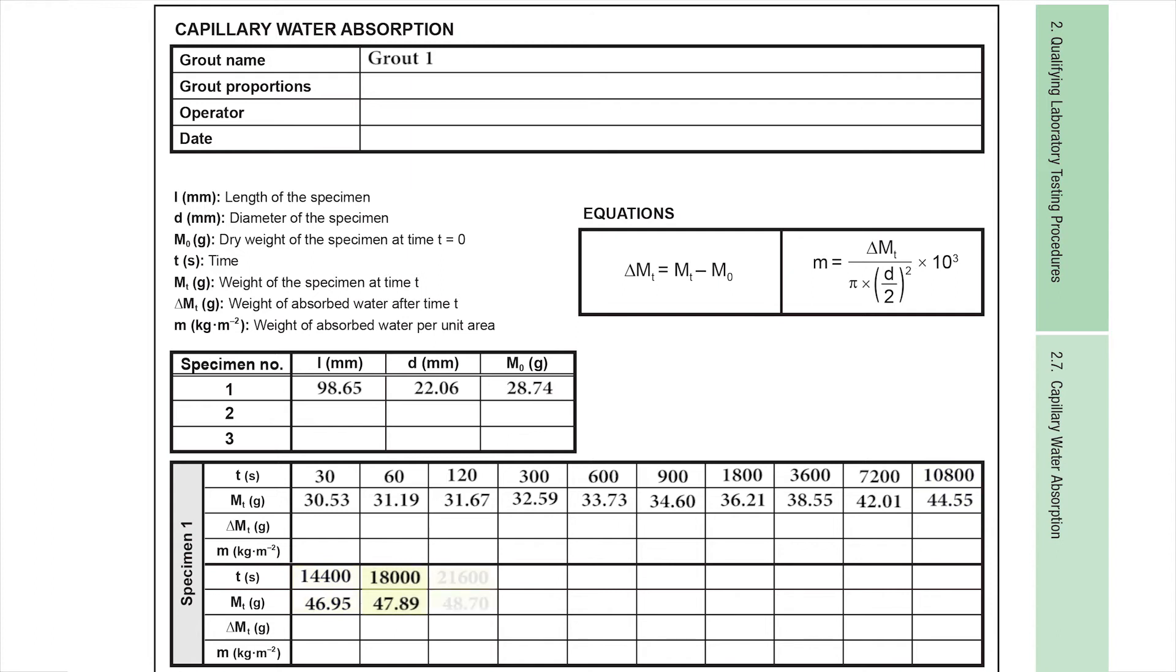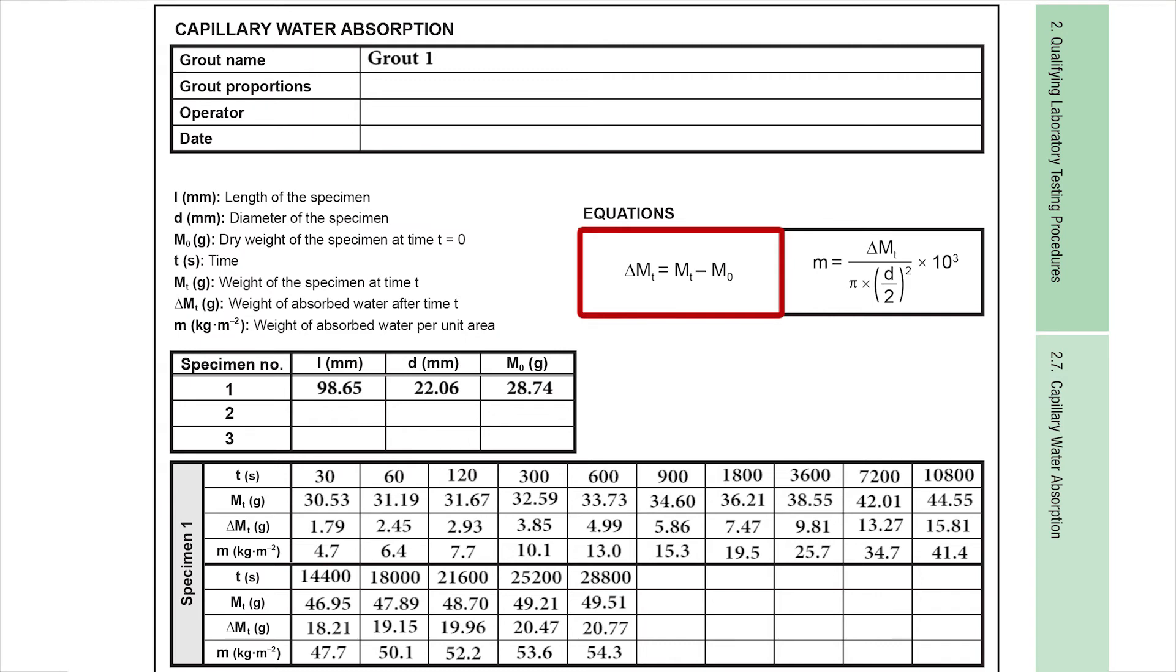Continue until the difference between two successive measurements is less than or equal to 1%. The amount of absorbed water after time t in grams is calculated as the difference between the weight of the specimen at time t and the dry weight of the specimen at time 0, both in grams. The weight of water absorbed per unit area in kilograms per square meter is calculated by dividing the amount of water absorbed after time t by the surface area of the grout specimen touching the water, where d is the diameter of the grout specimen in this equation.